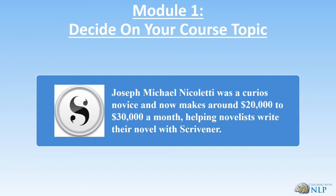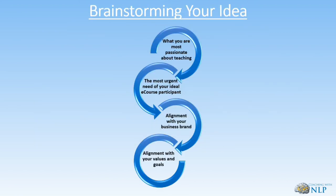Joseph Michael Nicoletti was actually a curious novice and now makes roughly thirty thousand dollars per month helping novelists write their novel using Scrivener. So go ahead and brainstorm some of your ideas.